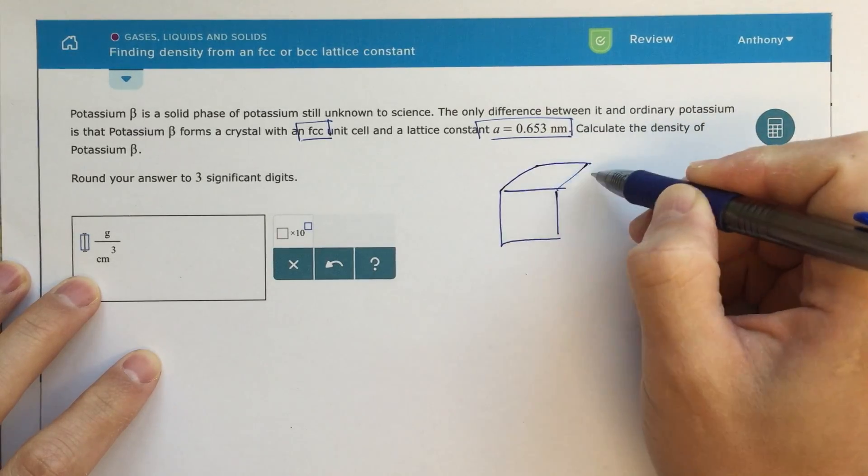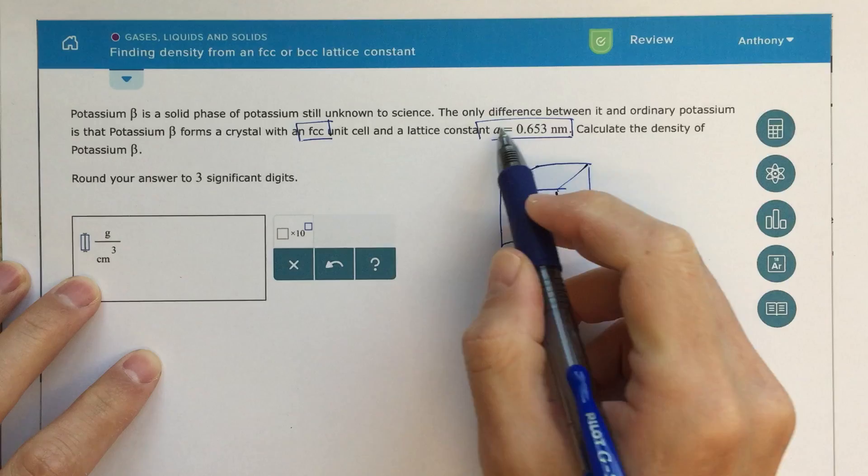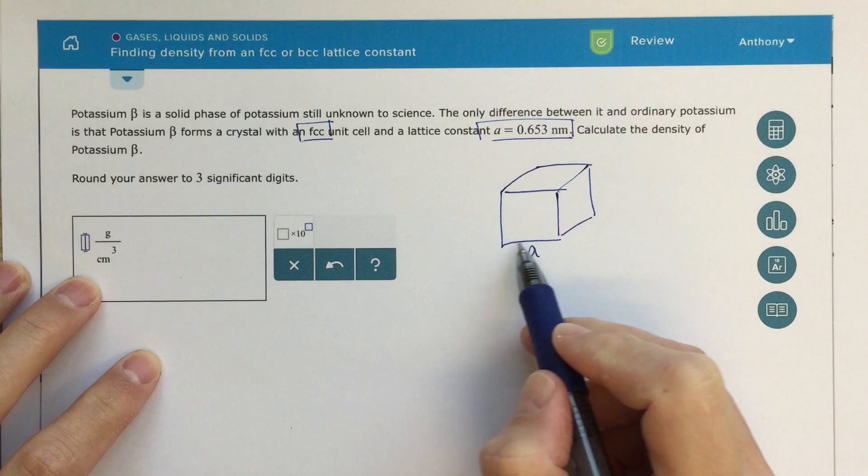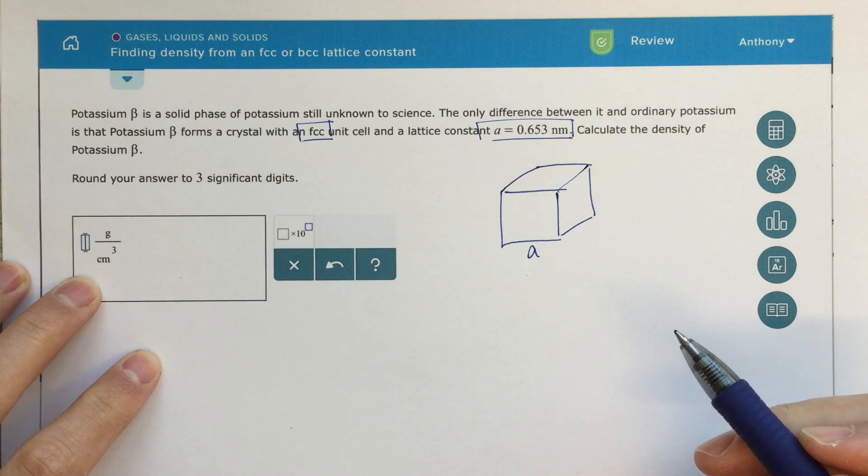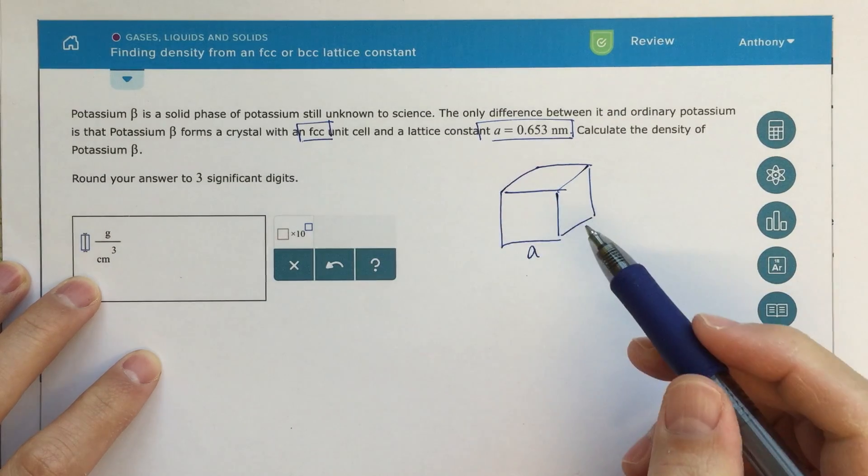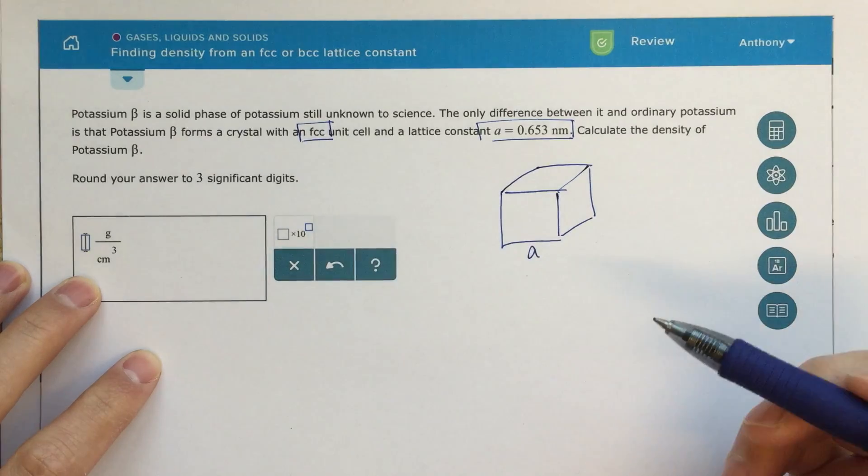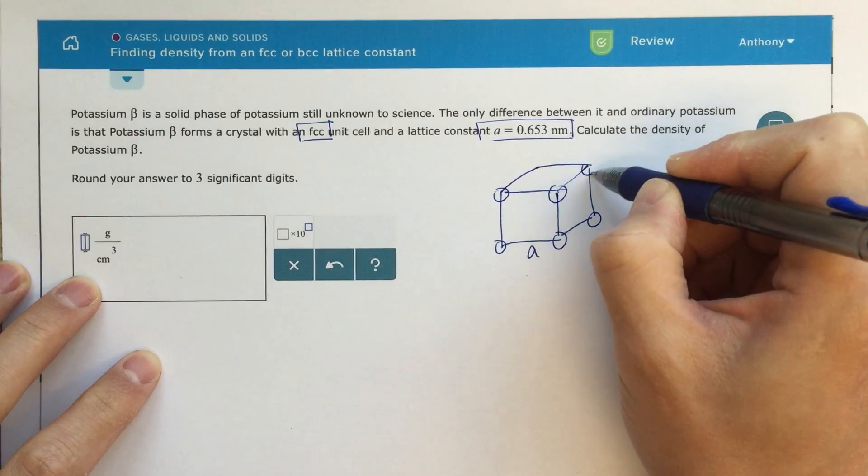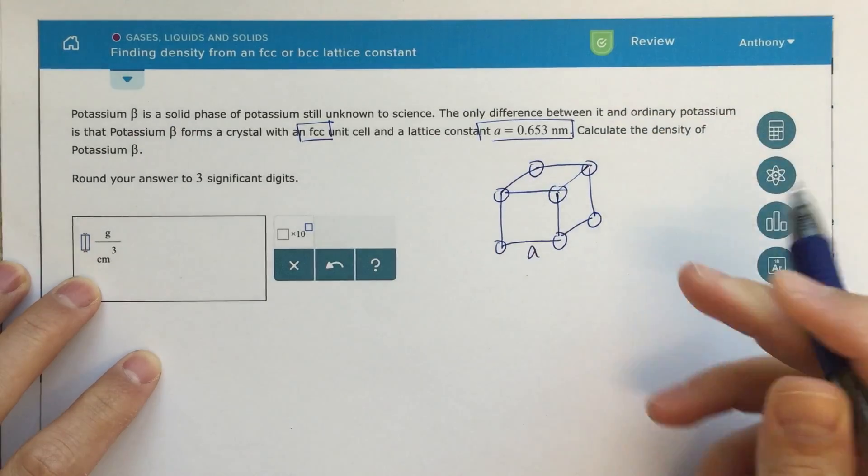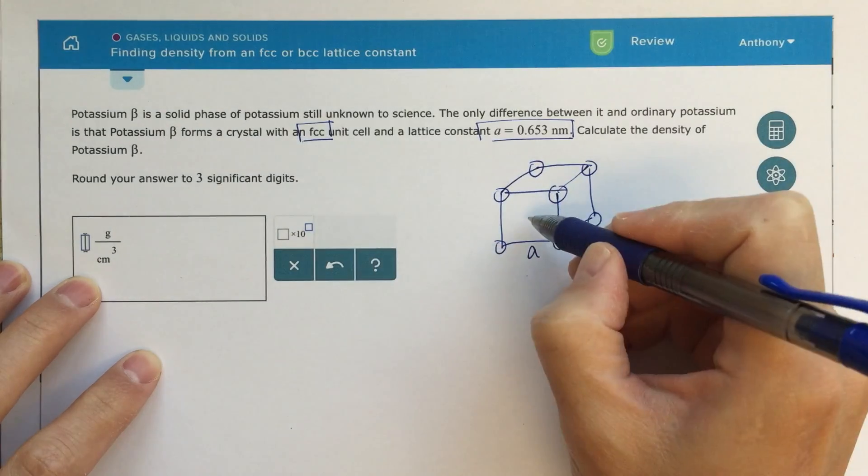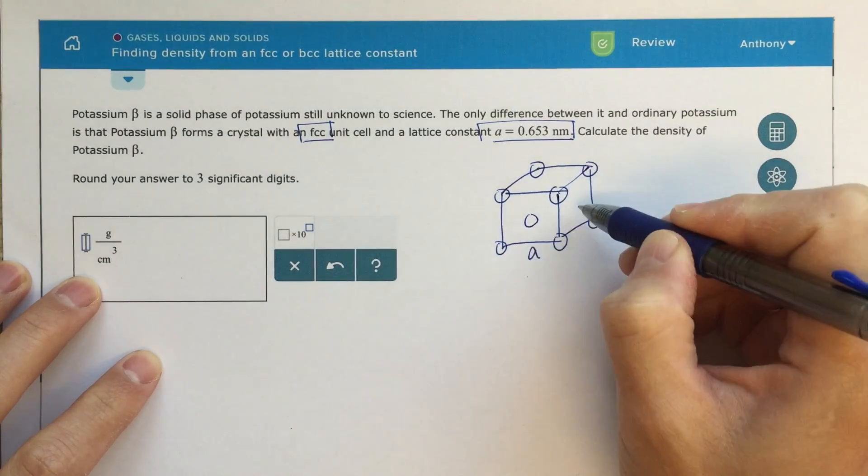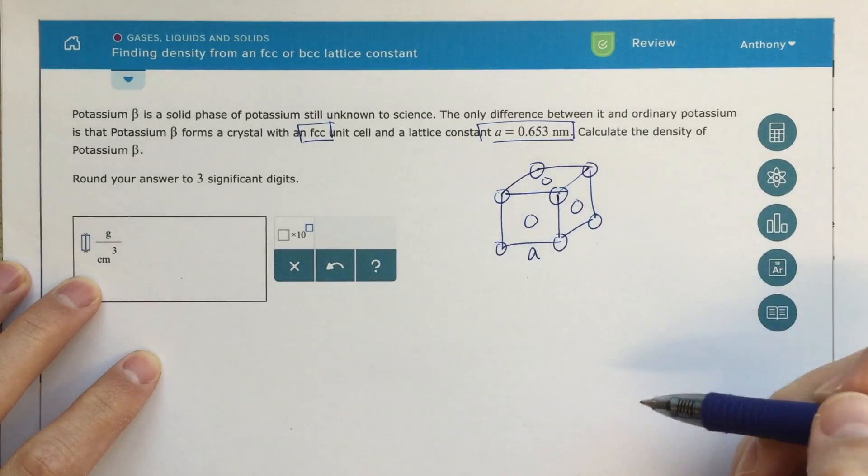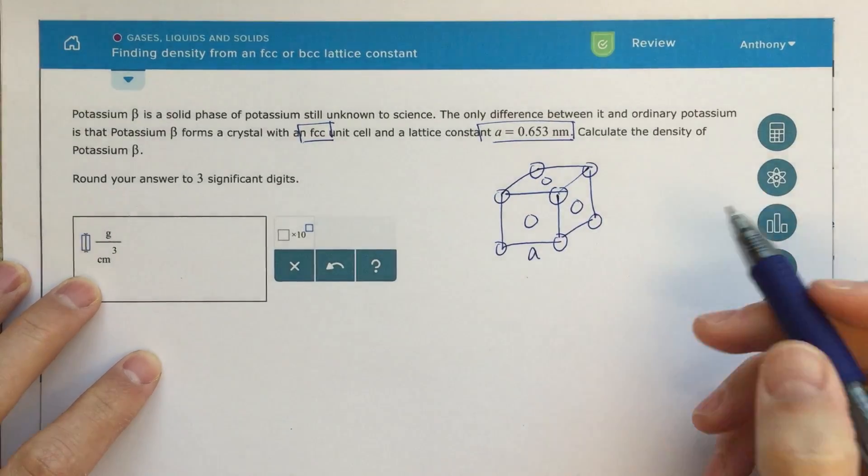So this alpha is going to be this distance here - the distance of one edge is the alpha value, 0.653 nanometers. Then face-centered cubic means that at each one of these edges or vertices, I'm going to have an atom, a potassium atom. Face-centered cubic means that in each face, there will also be an atom. Each one of these faces will also have an atom stuck into it.